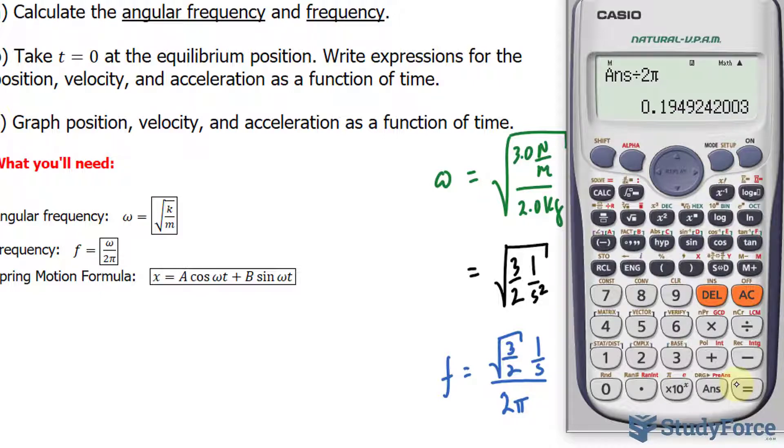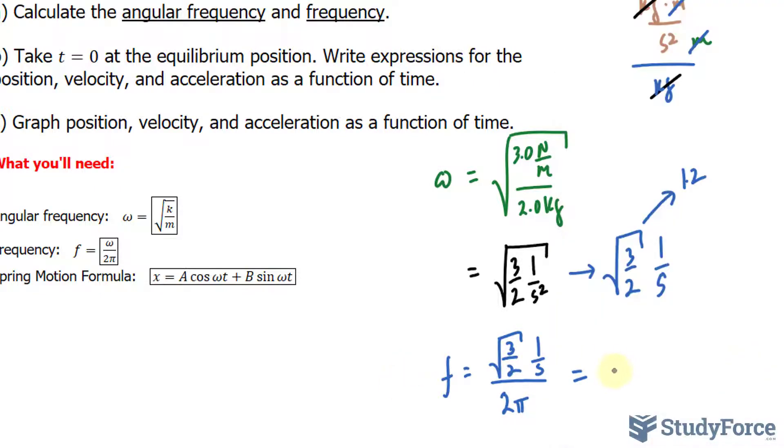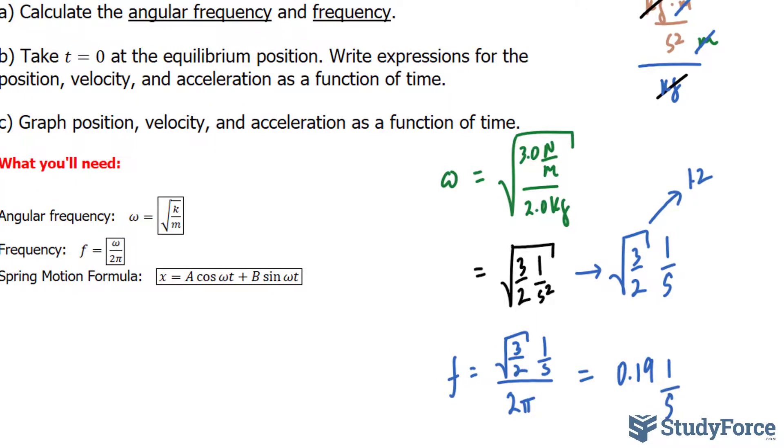So dividing these two numbers out, we have the square root of 3 over 2 divided by 2 times pi, and that's roughly equal to 0.19. The units are per second. That completes question A.